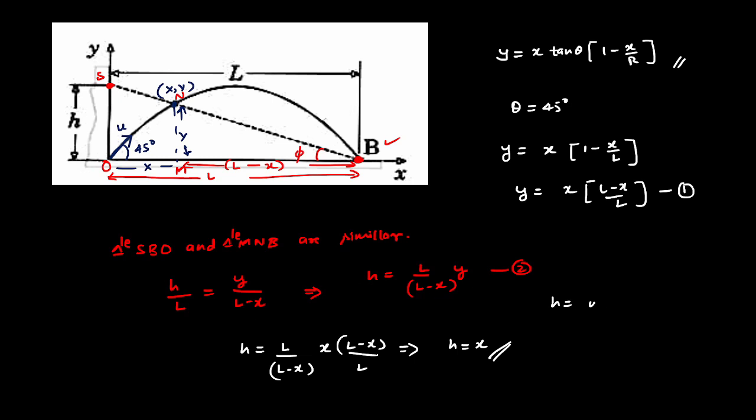So we have u x is equal to u cos 45 times t using kinematical equation for constant acceleration, where acceleration is zero in the horizontal direction. We got this. So h is going to be then u cos 45, 1 by root 2 times t. But what is this u?